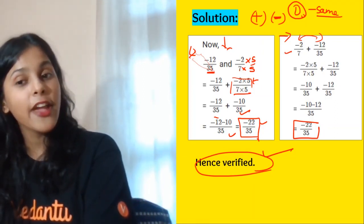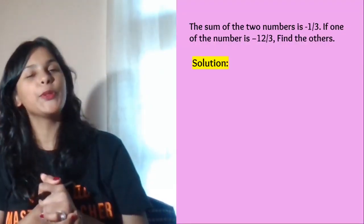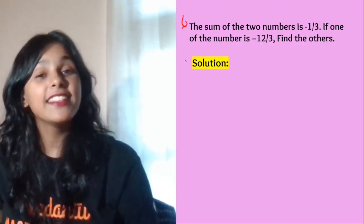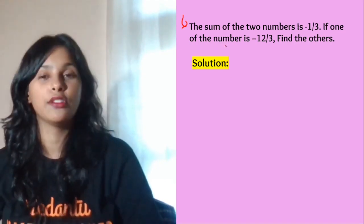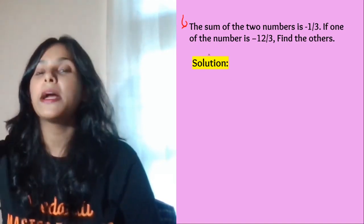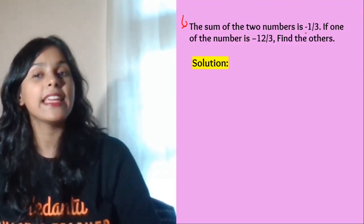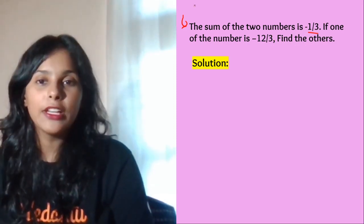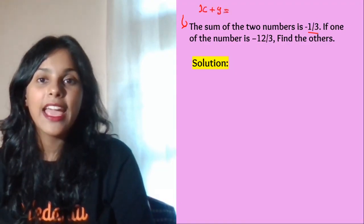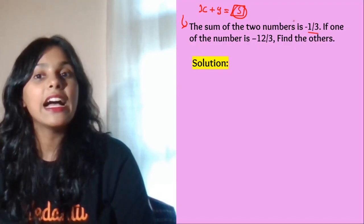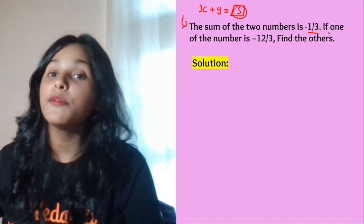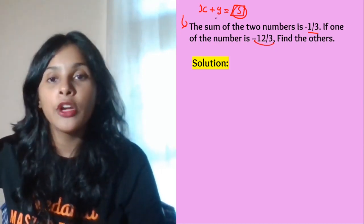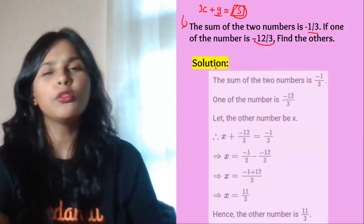The next question is very important for your examination and has been frequently asked. The numbers may differ but the question type is the same. You are given the sum of two numbers, which is minus 1 by 3. One number is given as minus 12 by 3, and you have to find the other number — like finding y when x plus y equals a given sum.